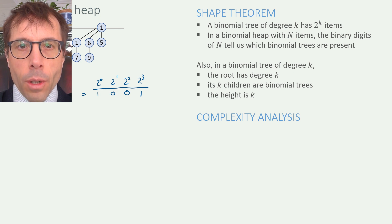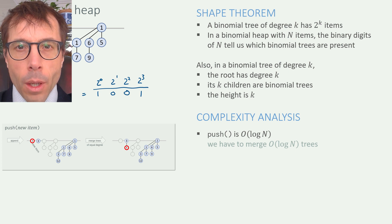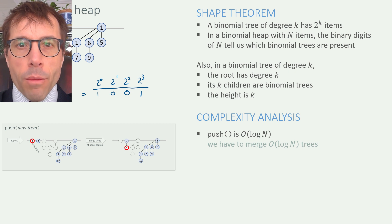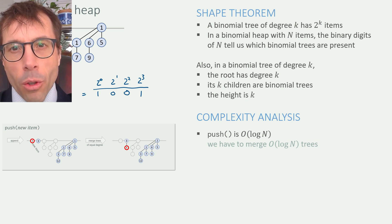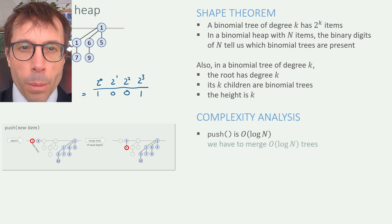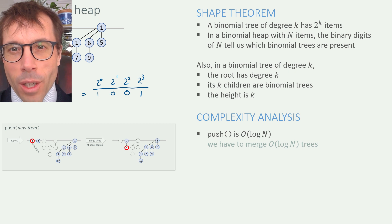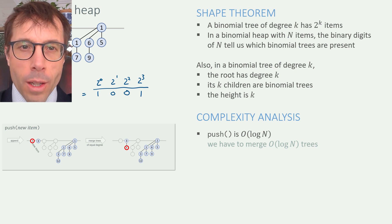Okay, complexity analysis. Let's start with push. When we push a new item, we simply create a new degree zero tree and add it to the list and then perhaps we have to go through a whole sequence of mergers. The maximum number of mergers that we have to do is equal to the number of trees in the heap, which is at most log n, because that's how many digits there are in the binary expansion of n. To be absolutely meticulous, the number of digits is the floor of log base 2 of n plus 1, but log n is good enough for big O analysis.